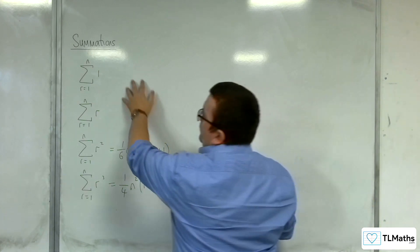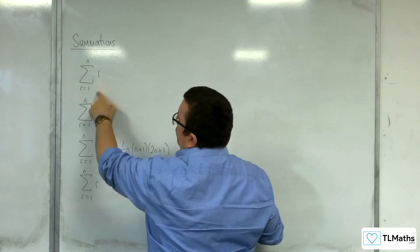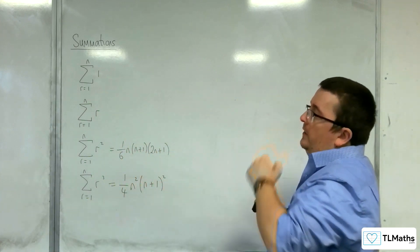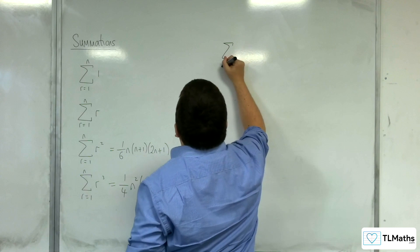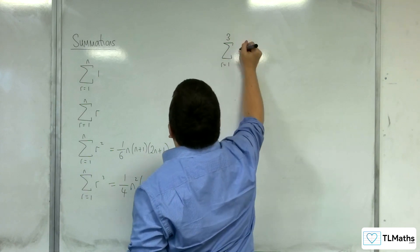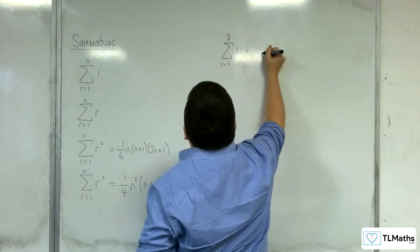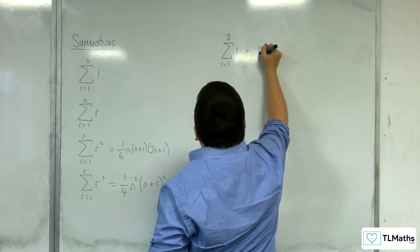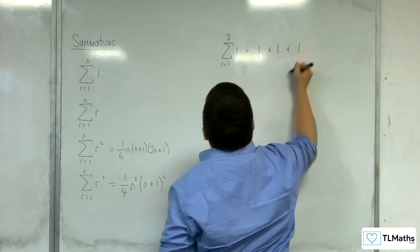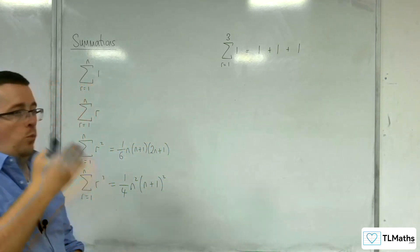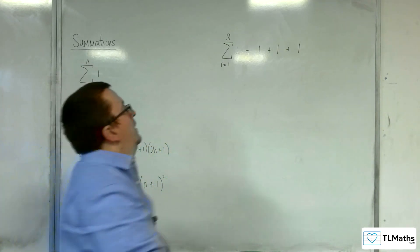The first one, we're summing 1 from R is 1 to N. Effectively, what I'm saying is that if I was summing from R is 1 to 3 of 1, what that means is that we've got 1 for R is 1, we've got 1 for R is 2, and we've got 1 for R is 3. And so this is just 1 plus 1 plus 1, which is 3.